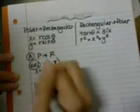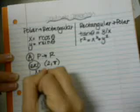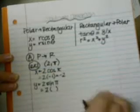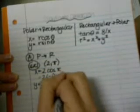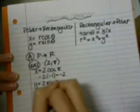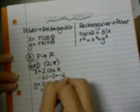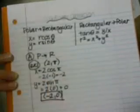To find my y coordinate, I'm going to do two sine pi. And that is two in the place of sine of pi. The sine of pi is zero. Two times zero is zero. And so my point is negative two, zero. And I'm done with that first problem.